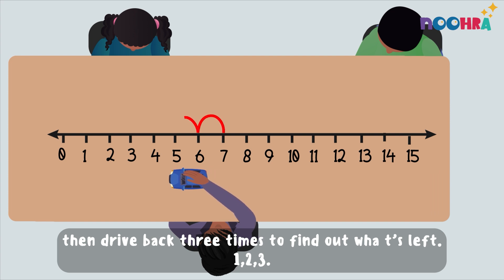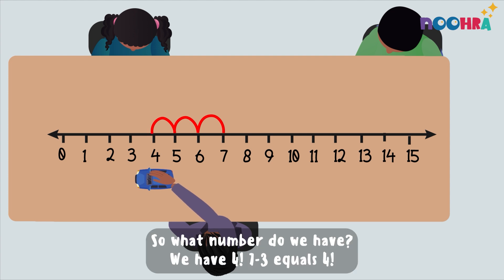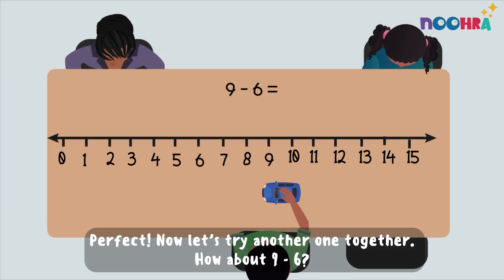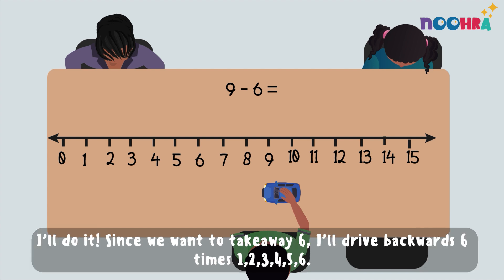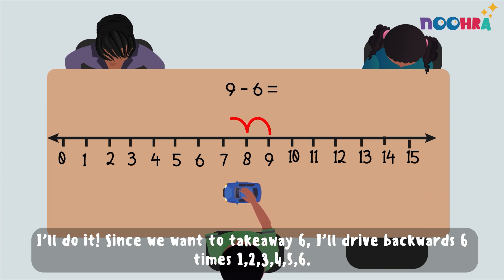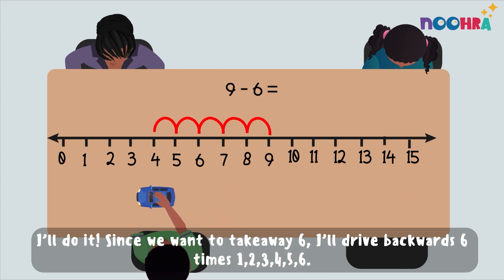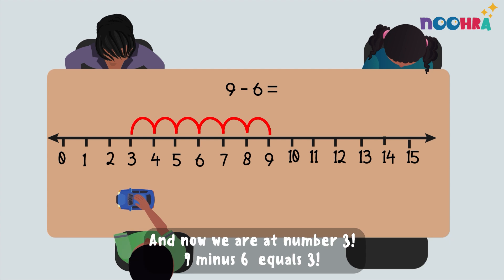One, two, three. So what number do we have? We have four! Seven minus three equals four. Now let's try another one together. How about nine minus six? I'll do it — since we want to take away six, I'll drive backwards six times: one, two, three, four, five, six. Now we're at the number three. Nine minus six equals three.